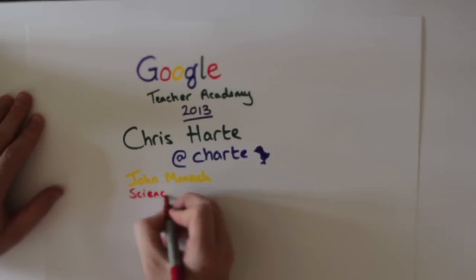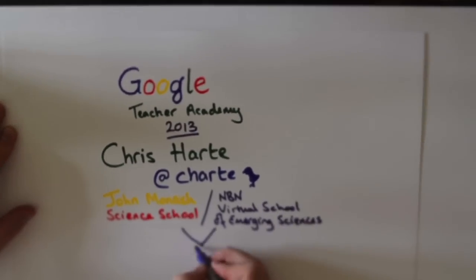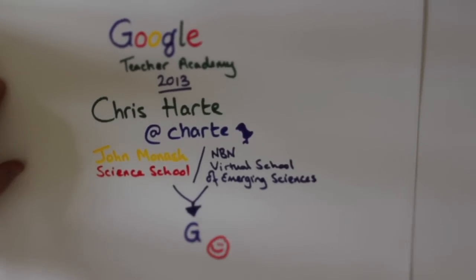I work at John Monash Science School as a leading teacher, but I am also one of the design thinkers behind the Virtual School of Emerging Sciences, which uses Google Apps, RealSmart, and WordPress as our learning environment, which is why I love Google.